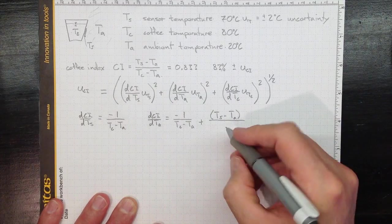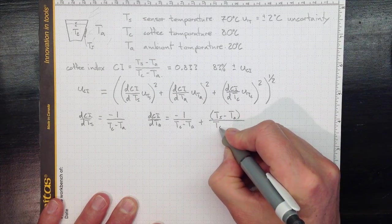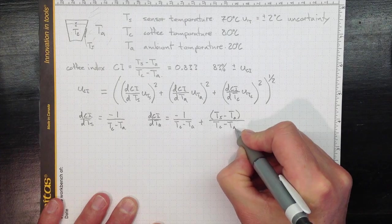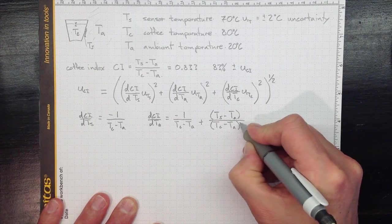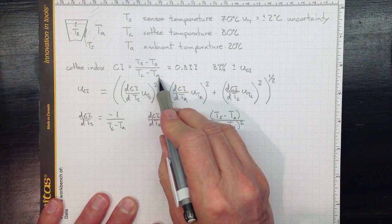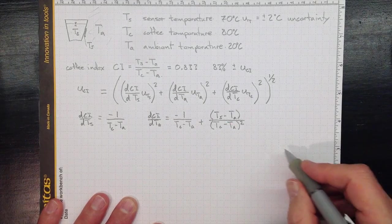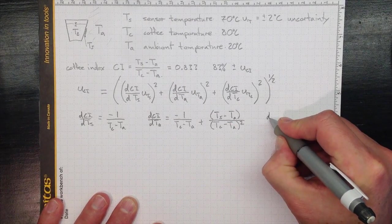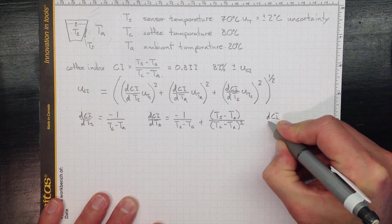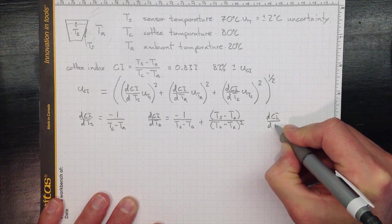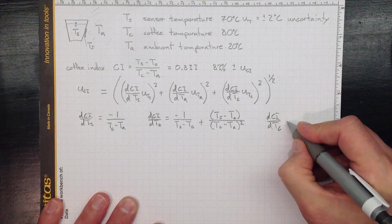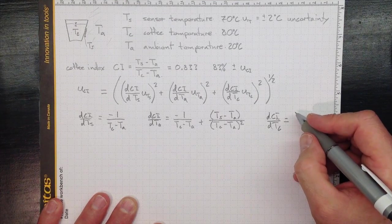divided by TC minus TA minus TA, squared, and that came from this TA down here. And finally, DCI, DTC, will just be equal to